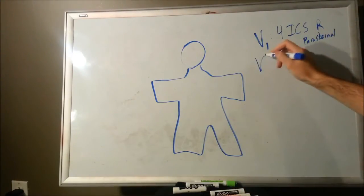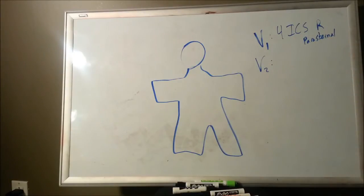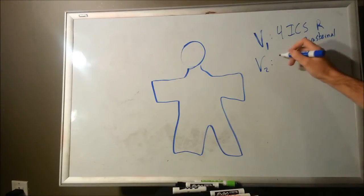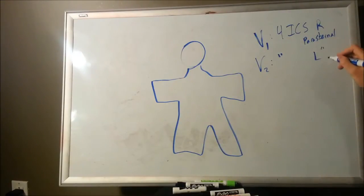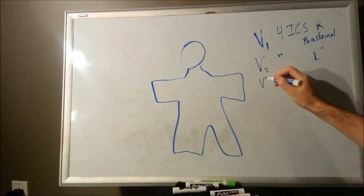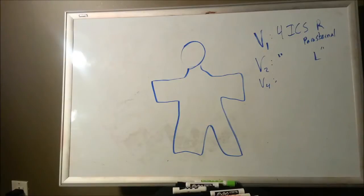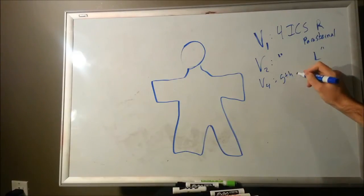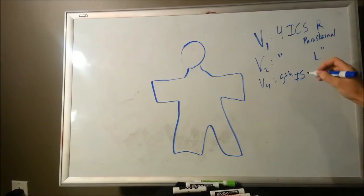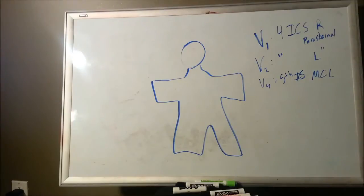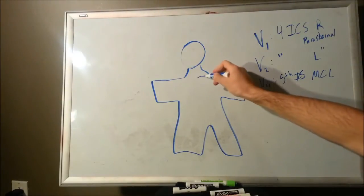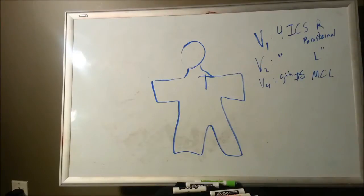So you place that one there. The second placement, lead two, is going to be the fourth intercostal space on the left side parasternal, so I'm just going to do the same thing on the left side. Next, precordial lead four — you're going to skip three initially. Lead four is going to be in the fifth intercostal space on the midclavicular line. MCL is my abbreviation for midclavicular line — find the clavicle and bisect it; that is your midclavicular line.